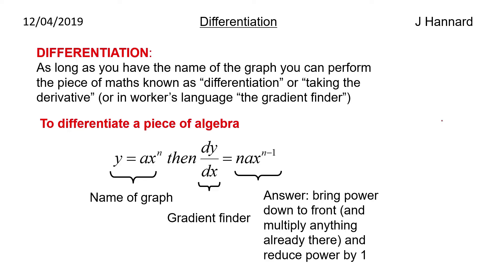So to differentiate a piece of algebra which is y equals ax to the n, that's the name of your graph or your curve. Then we say dy by dx is equal to nax to the n minus 1, where dy/dx is the gradient finder. So the answer is bring the power to the front and multiply anything already there and reduce the power by 1.